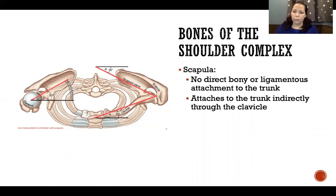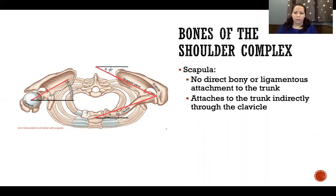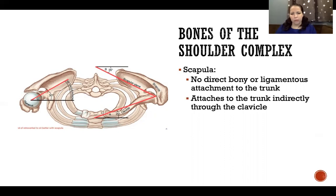The scapula has no direct bony or ligamentous attachment to the trunk. We describe the relationship between the scapula and the thorax as the scapulothoracic joint, but it isn't technically a joint — there's no joint capsule, no ligamentous attachment, no direct articulation between bones. There are layers of muscle between the scapula and the ribs. The scapula attaches to the trunk indirectly through the clavicle, which connects it to the trunk via the sternum — making the sternum the only site of attachment of the entire upper extremity to the body.